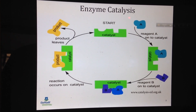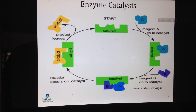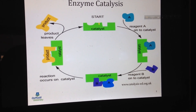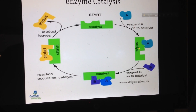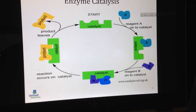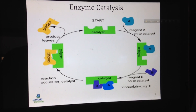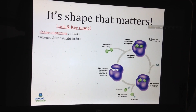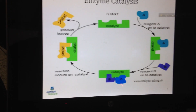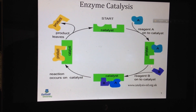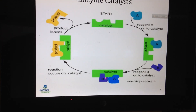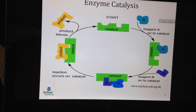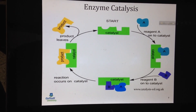The previous examples were breakdown reactions, while this one is a formation reaction. During the formation reaction, two different reactants — reactant A and reactant B — bind onto the catalyst, which initiates the reaction. They bind together, the catalyst initiates the reaction, and then the product is formed and released. This is how any chemical reaction through enzyme catalysis proceeds.